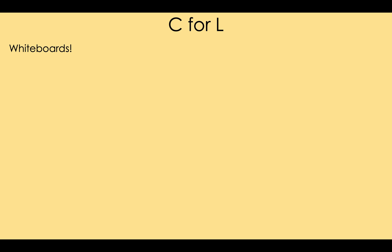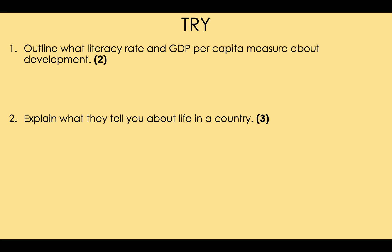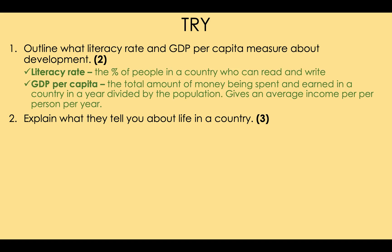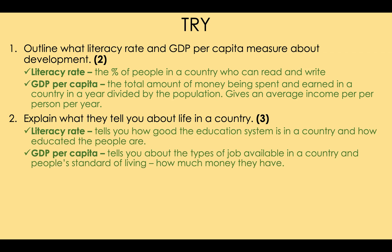Check whether you understood these questions — if not, watch the video again and go over your notes. Now try to answer the next set of questions by yourselves. Write the questions out in your books, attempt to answer them, then go through the answers in green giving yourself a mark. The literacy rate and GDP per capita would each be worth one mark, and make sure you explain what each measure tells you about how good people's lives are.